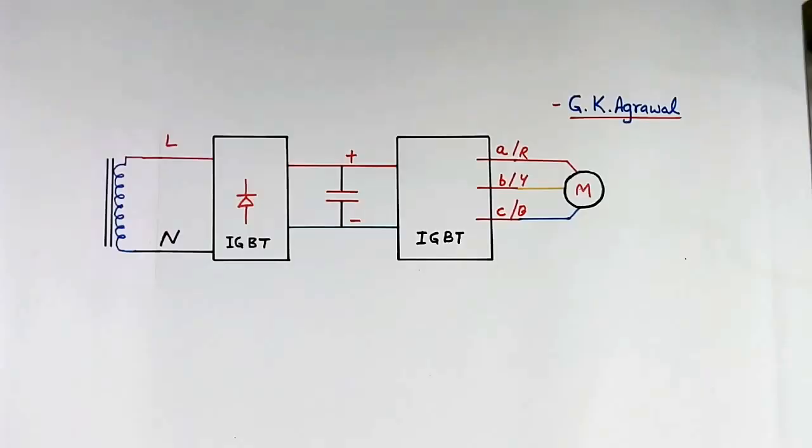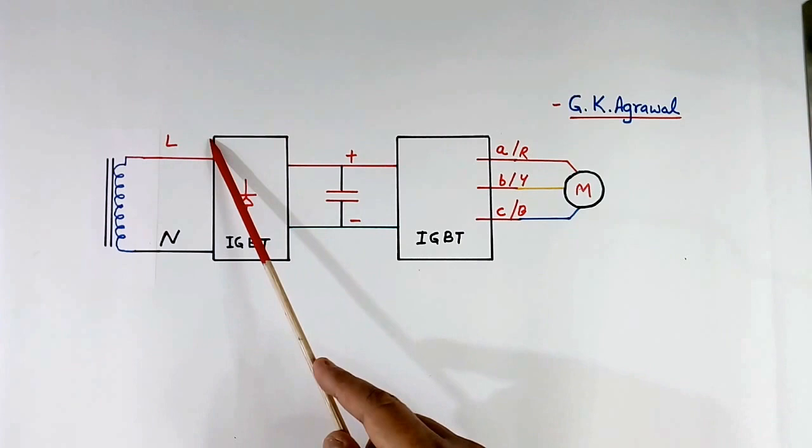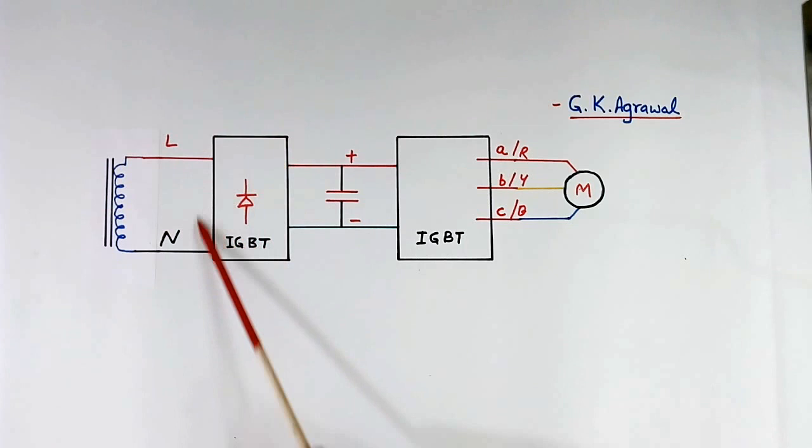This is secondary of the transformer. Just now I have shown you. This transformer is located inside the engine. This is line and neutral. This is rectifier. Which converts AC into DC. This rectifier is made using IGBT. Nowadays IGBT are used.